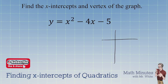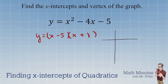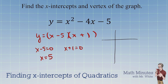Here's a second example. We have a quadratic function x squared minus 4x minus 5. We reverse FOIL it and factor to get (x minus 5)(x plus 1). You can check your work by doing outside and inside — those add up to negative 4, and the numbers multiply to negative 5.